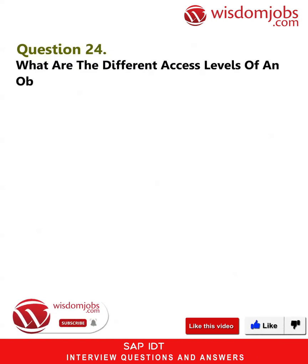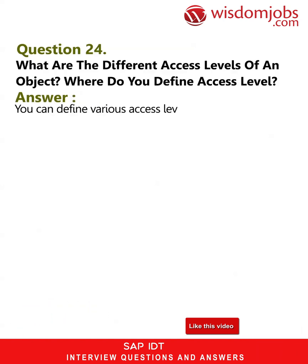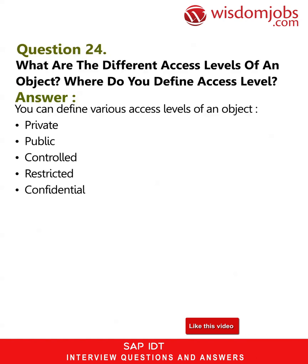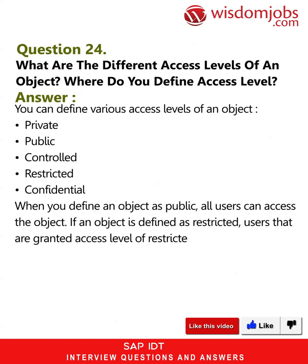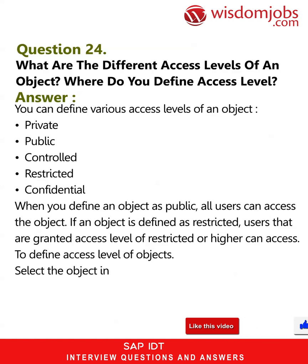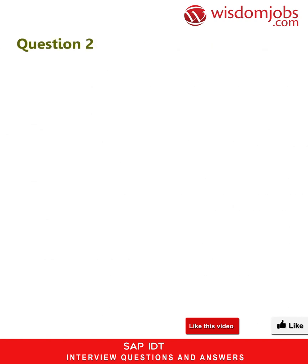Question 24: What are the different access levels of an object, and where do you define the access level? Answer: You can define various access levels of an object: private, public, controlled, restricted, and confidential. When you define an object as public, all users can access the object. If an object is defined as restricted, users granted access level of restricted or higher can access it. To define access level, select the object in the business layer, use the Ctrl key to select multiple objects, right-click on the object, and choose Change Access Level.